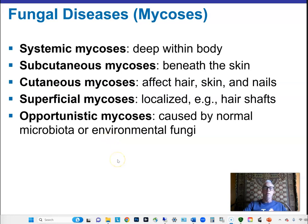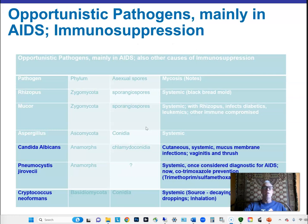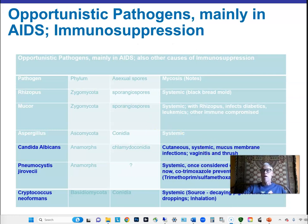Now let's look at some fungal diseases. Systemic mycoses occur throughout the body — some get into the circulation or travel through the lymphatic system. Subcutaneous mycoses get in under the skin. Cutaneous mycoses infect the skin, with microbes eating the keratin on skin, nails, and hair. Superficial mycoses grow on the surface and on hair shafts. Some mycoses are opportunistic in nature.